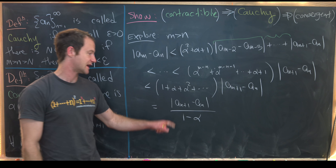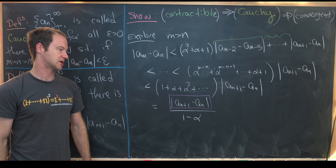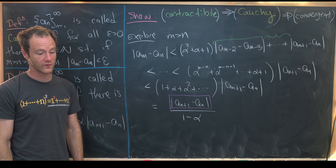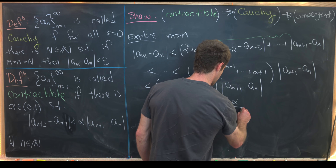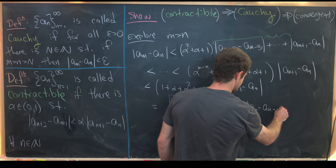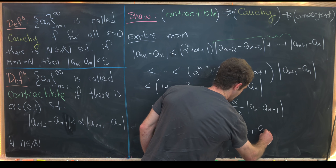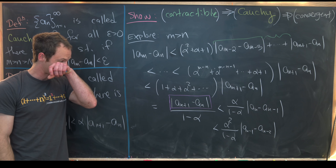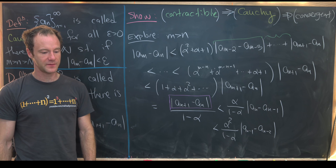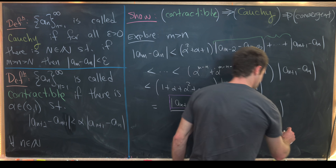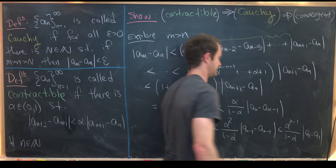Now we apply the contraction to the single absolute value |a_{n+1} - a_n| repeatedly. After one step it is less than alpha/(1 - alpha) times |a_n - a_{n-1}|, then alpha^2/(1 - alpha) times |a_{n-1} - a_{n-2}|, and so on. Taking this all the way down gives alpha^{n-1}/(1 - alpha) times |a_2 - a_1|.